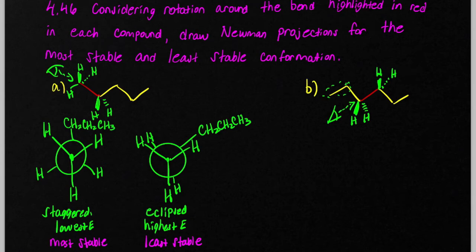In yellow here, we have like an ethyl group. And then in yellow here, we have an ethyl group. So we're going to abbreviate those as CH2CH3 groups when we draw our Newman projections.